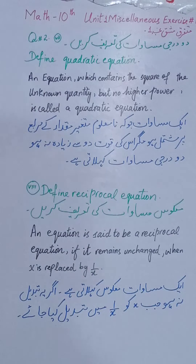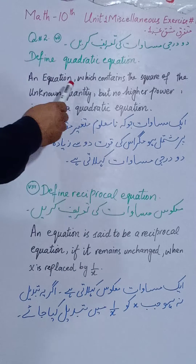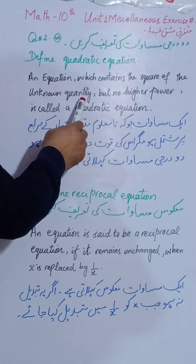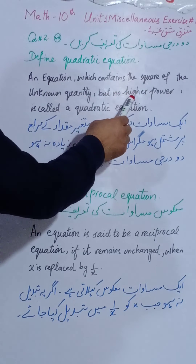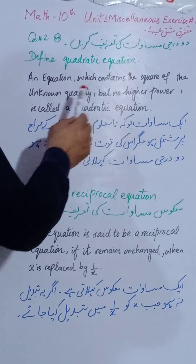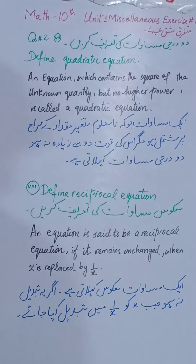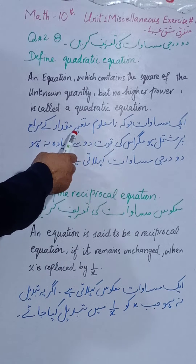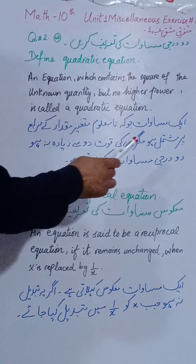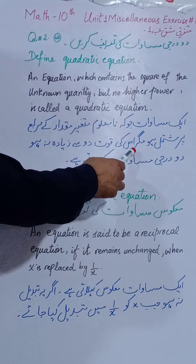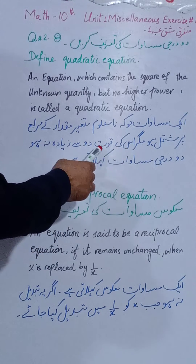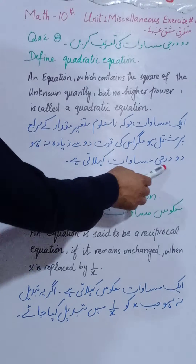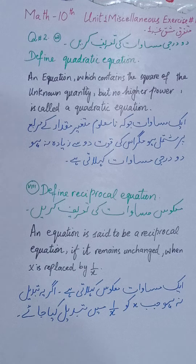Define Quadratic Equation: An equation which contains the square of the unknown quantity but no higher power is called a quadratic equation. ایک مساوات جو کہ نامعلوم متغیر مقدار کے مربع پر مشتمل ہو مگر اس کی قوت دو سے زیادہ نہ ہو، دو درجی مساوات کہلاتی ہے۔